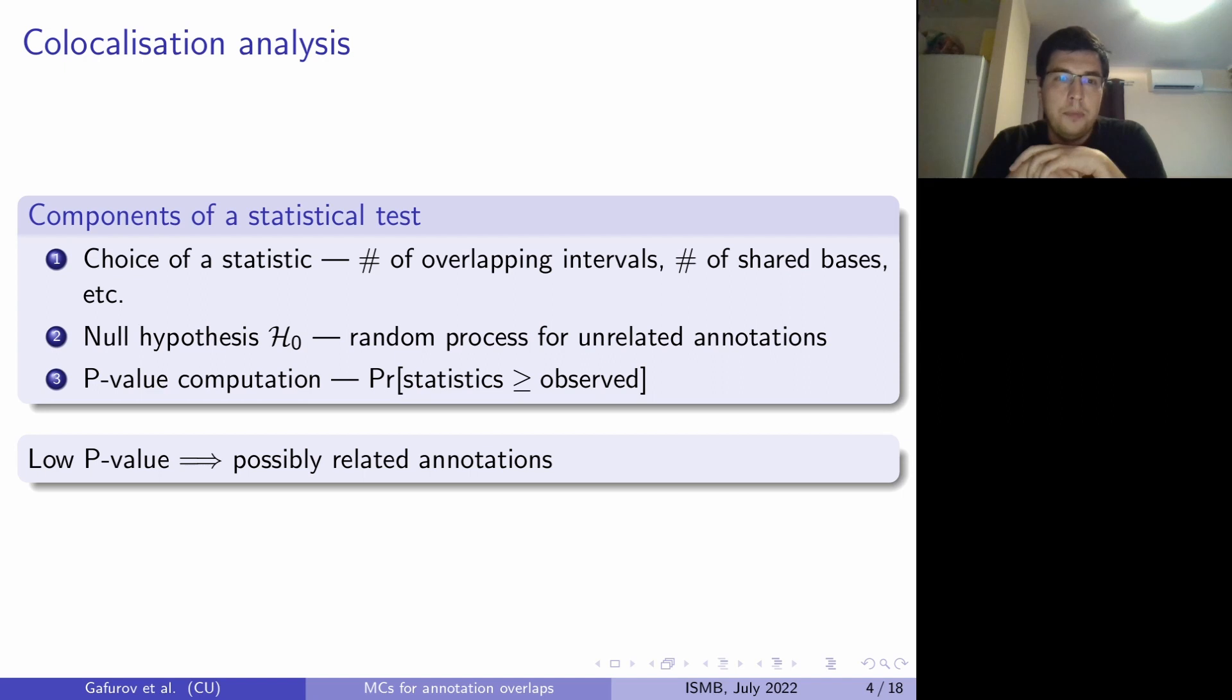This is a random process which governs the annotations in case they are unrelated. And the third one is the algorithm for computation of the p-value, where p-value is the probability that the statistic would be as extreme as the observed one under the null hypothesis. And in case that probability is low, then we will conclude that those annotations are indeed related.